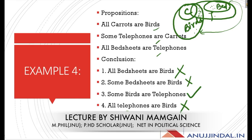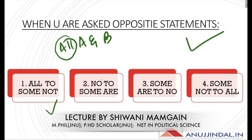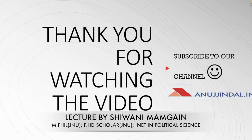This is also very important: when you are asked about the opposite statement — जैसे 'All A are B' का opposite क्या होगा — हमेशा याद रखिए: 'all' का opposite 'some not' है, 'no' का opposite 'some are' है, 'some are' का opposite 'no' है, and 'some not' का opposite 'all' है। ये चारों एक-दूसरे के opposite हैं। अगर exam में 'no' का opposite पूछा जाए तो 'some are' mark करें, और अगर 'some not' का opposite पूछा जाए तो 'all' mark करें। Thank you for watching the video. Subscribe to our channel.